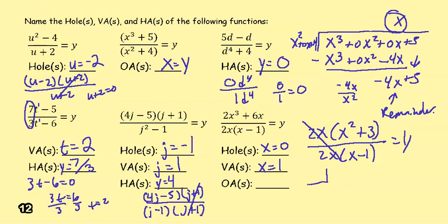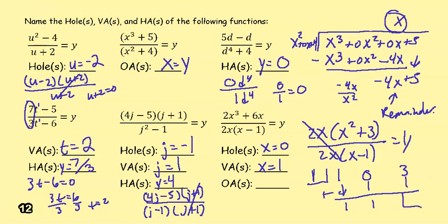We use synthetic division with 1 (the vertical asymptote) and coefficients 1, 0, 3. Working through: 1 times 1 is 1, 1 times 1 is 1, giving a remainder of 4. Since we only need the quotient, the oblique asymptote is y = x + 1.